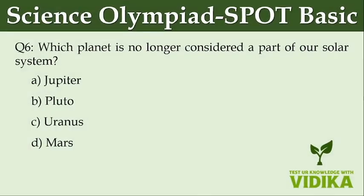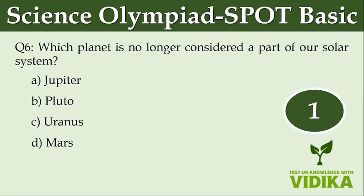Which planet is no longer considered as a part of our solar system? Option A: Jupiter. Option B: Pluto. Option C: Uranus. Option D: Mars.